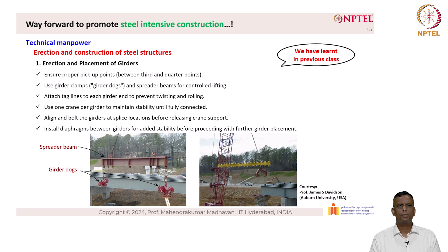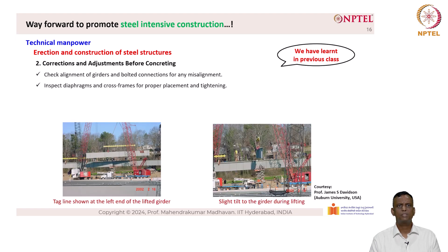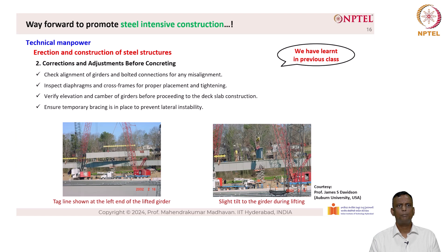Install diaphragms between girders for added stability before proceeding with further girder placement. Addition of a diaphragm provides added stability and will prevent any kind of twisting, especially for a curved girder. Corrections and adjustments before concreting include: checking alignment of girders and bolted connections for any misalignment, inspecting diaphragms and cross-frames for proper placement and tightening, verifying elevation and camber of girders before proceeding to deck slab construction, and ensuring temporary bracing is in place to prevent lateral instability.